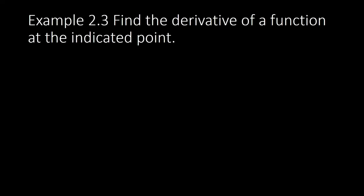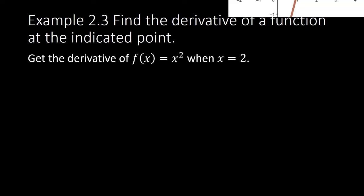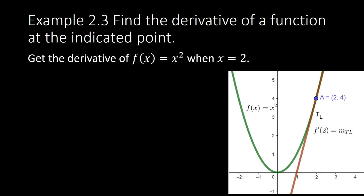Find the derivative of a function at the indicated point. Let our function be f of x equals x squared. What is the derivative when x equals 2? We have a parabola opening upward, and when x equals 2 the point on the parabola has coordinates (2, 4). We draw a tangent line at that point, and whatever its slope is, that is the derivative of the function when x equals 2.